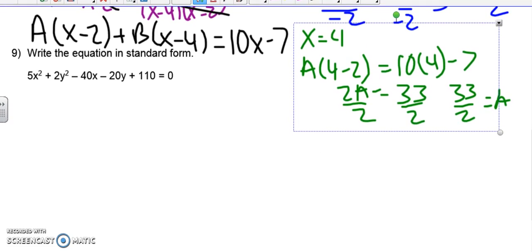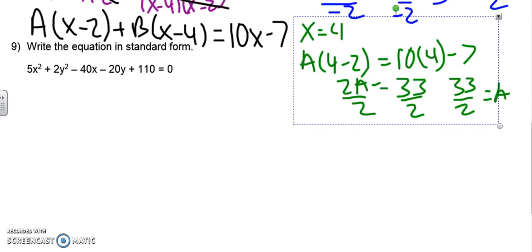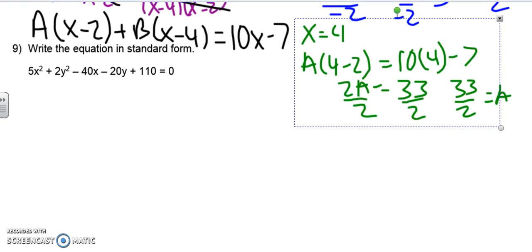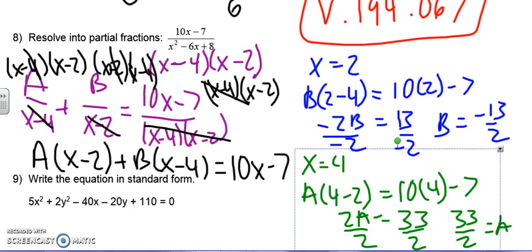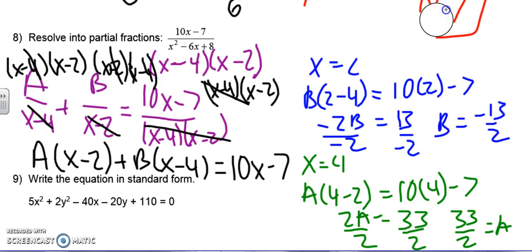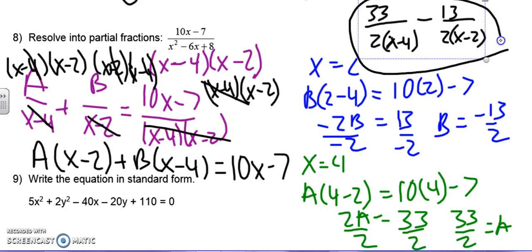Going back to the top. My a value was 33 over 2. Here, I'm going to erase my volume so I have a little bit more room up here. So instead of a, I'm going to write 33 over 2. And the denominator is x minus 4. So I'm just going to leave that like that. My b value is negative, so I'm going to write minus 13 over 2 and then x minus 2. So that's basically saying that was the original problem.